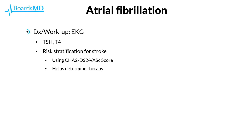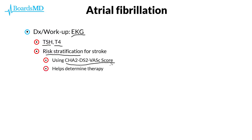In terms of diagnosis and workup of our patients with atrial fibrillation, you are going to get an EKG and see this irregularly irregular rhythm. Additionally, we should get a TSH as well as a T4, because hyperthyroidism and hypothyroidism are very high on the list of risk factors that can tip off atrial fibrillation. Additionally, we should perform risk stratification for stroke using the CHADS-2 VASc score, which will ultimately help us determine whether our patients need anticoagulation therapy.